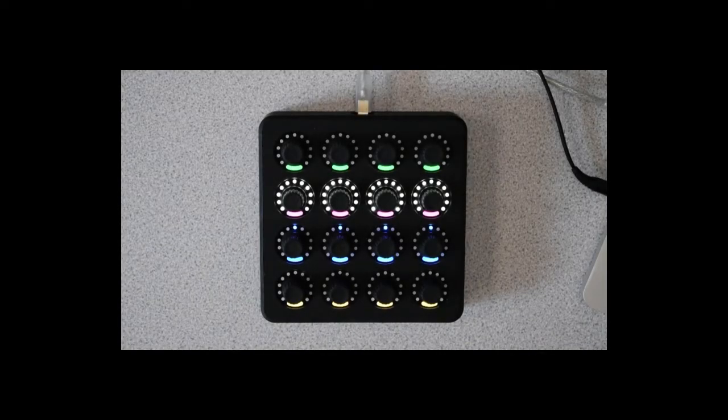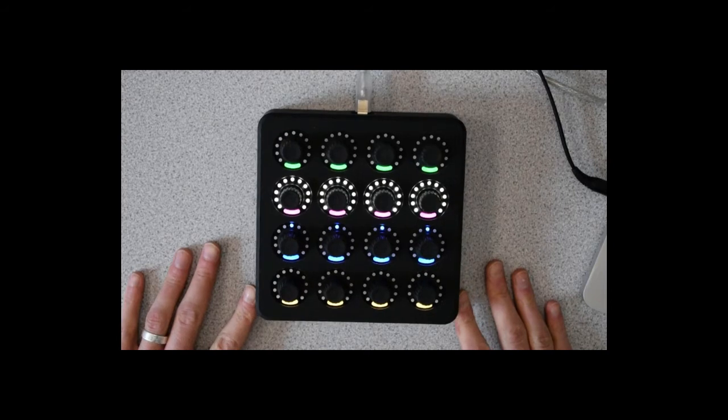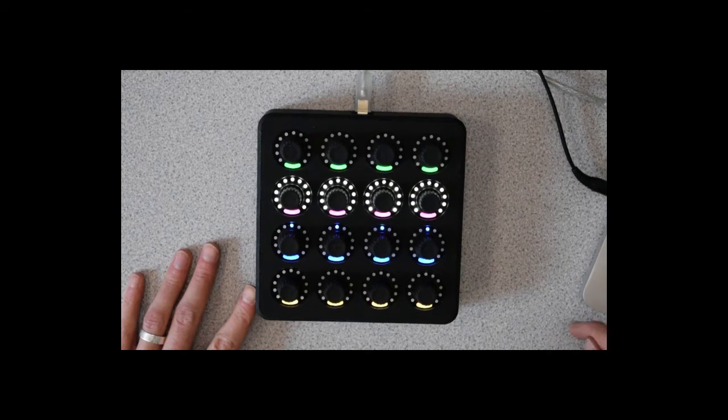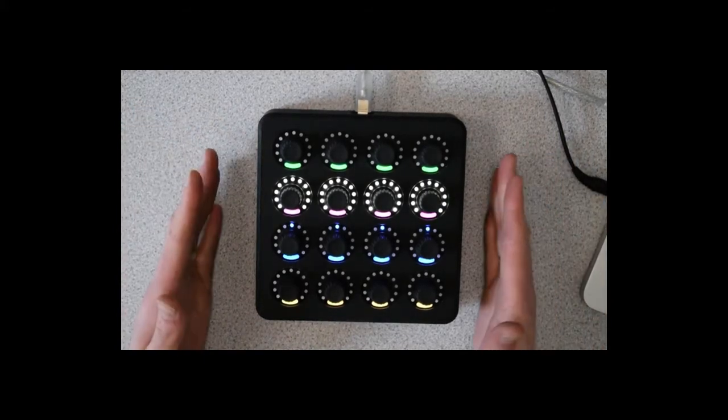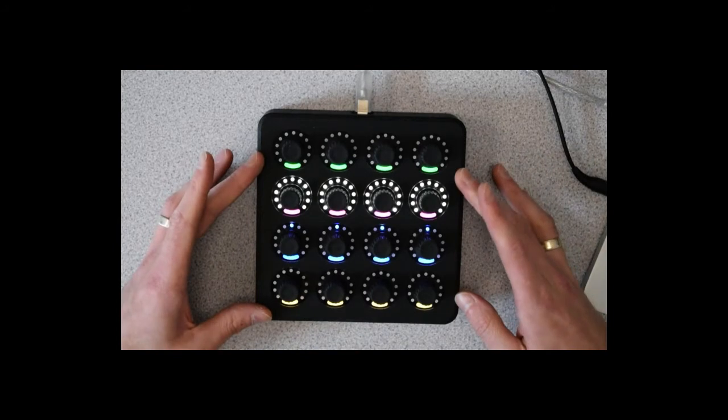Okay, so here we have my granular looper. The software is Max 7. The granular engine is an external package called Petra, and you can get that from the packages section in Max. And the user interface hardware side is the MIDI Fighter Twister.